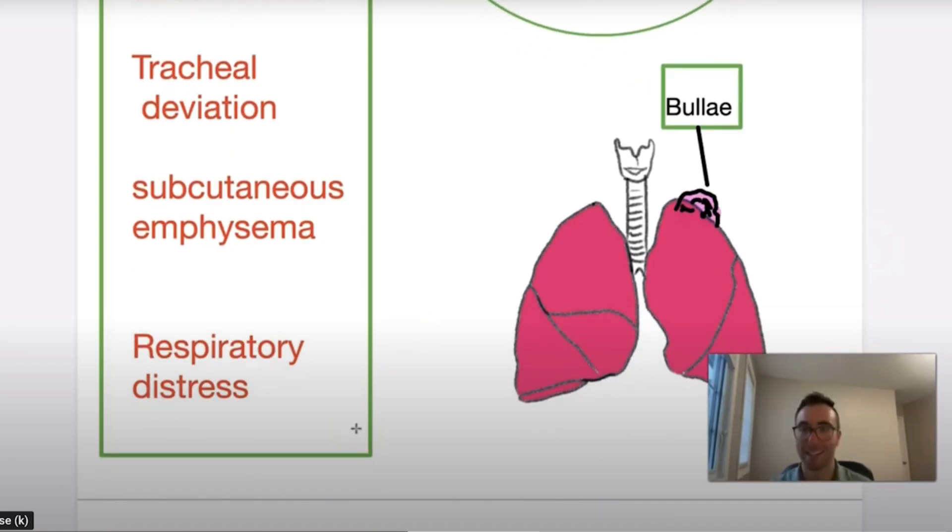And respiratory distress. So respiratory distress, dyspnea, and pleuritic chest pain are the main clinical manifestations of a tension pneumothorax.